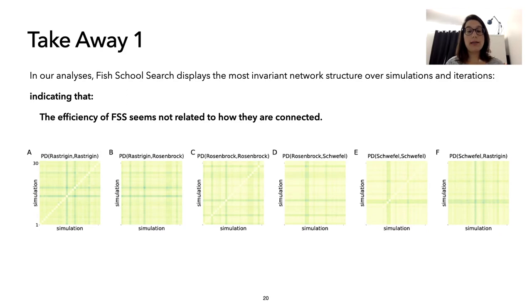The first takeaway is that FSS shows the most invariant network structure, showing that the efficiency in the swarm is not on how agents are connected to each other, but on how much they influence each other, which is not the case of PSO, because it's really important on how the agents are connected to each other.